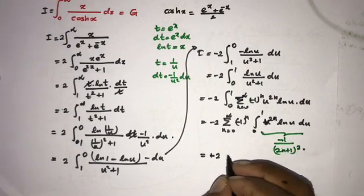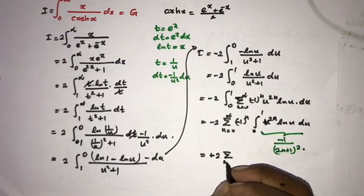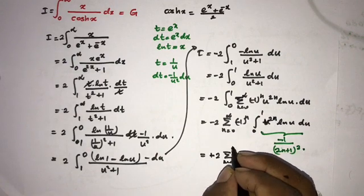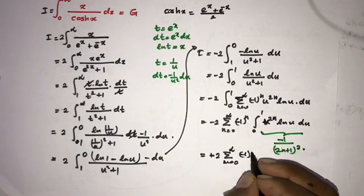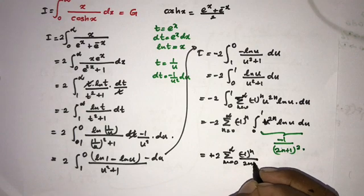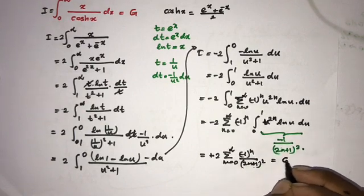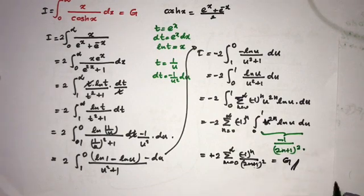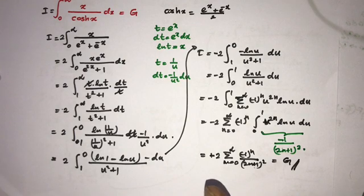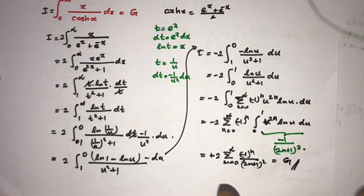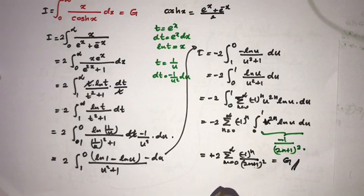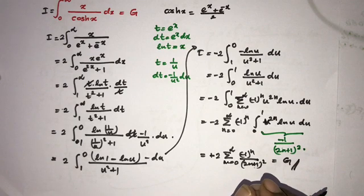This gives us 2 times the sum from n equals 0 to infinity of minus 1 to the n over 2n plus 1 squared, and we know this is equal to Catalan's constant. If you like, please subscribe to this channel. Thank you for watching!